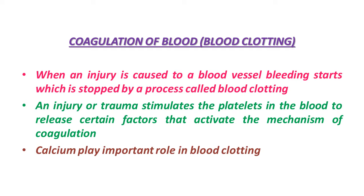Why does the bleeding stop? Because in our body a mechanism of coagulation of blood, or blood clotting, exists. After some time, due to this mechanism, the flowing blood stops. Blood exhibits coagulation in response to injury or any trauma condition — this mechanism prevents excessive loss of blood from our body. We have all observed a dark reddish-brown scab that forms at the site of a cut or injury over a period of time.